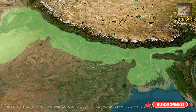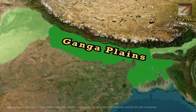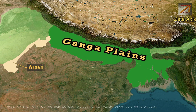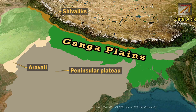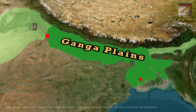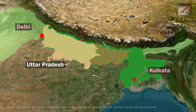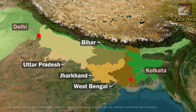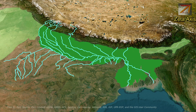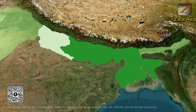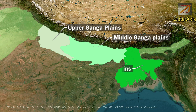The next important part of the Northern Plains is the Ganga Plains, which is the largest section. It is bounded by the Aravallis in the west, the Shivaliks in the north and east, and the Peninsular Plateau in the south. The Ganga Plains spread from Delhi in the west to Kolkata, passing through Uttar Pradesh, Bihar, and West Bengal, extending further into Bangladesh. The Ganga Plains can be further divided into three sections: Upper Ganga Plain, Middle Ganga Plain, and Lower Ganga Plain.